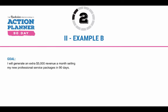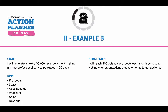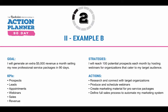Here's example B. 'I will generate an extra $5,000 in revenue a month selling my new professional service packages in 90 days.' You can track your prospects, leads, appointments, webinars, sales, and revenue. In this example, the strategy is: 'I will reach 100 potential prospects each month by hosting webinars for organizations that cater to my target audience.' The actions could include researching and connecting with target organizations, producing and scheduling webinars, creating marketing material for professional service packages, and defining the full sales process to automate the marketing system. When you take these actions and track the results, you're going to be on your way to achieving that rock.